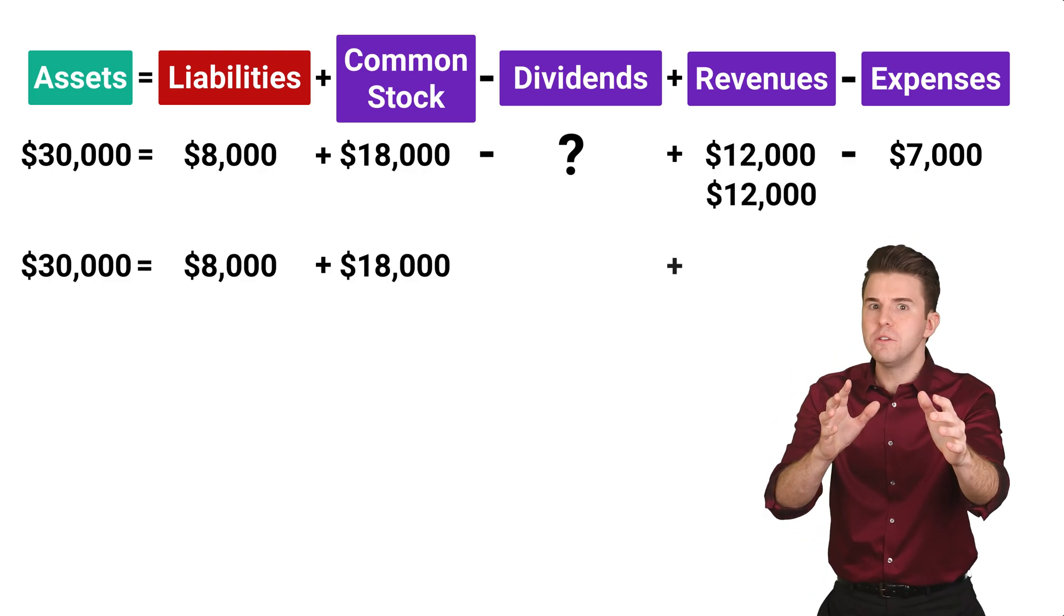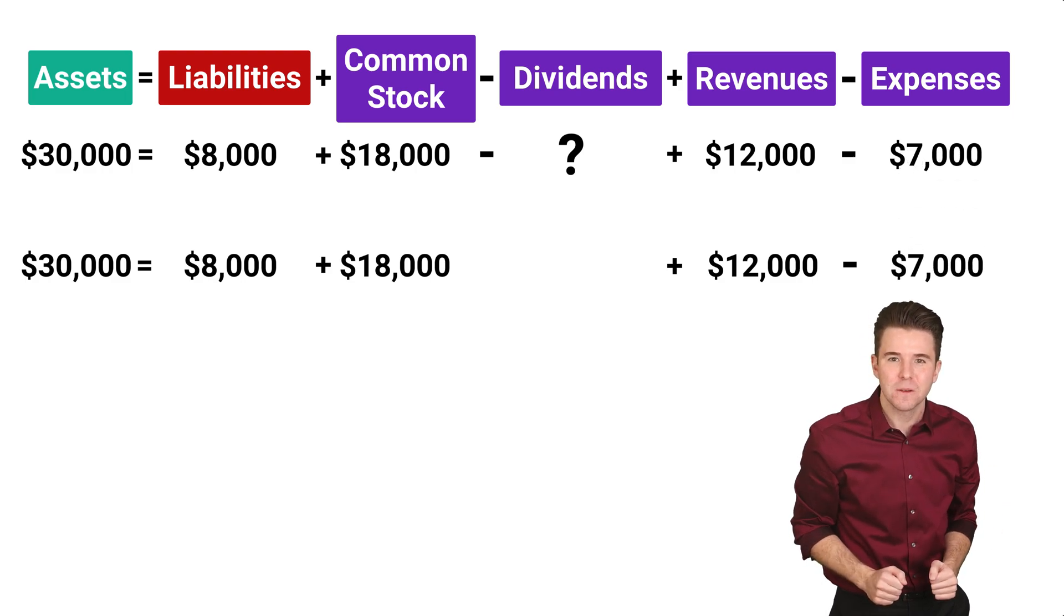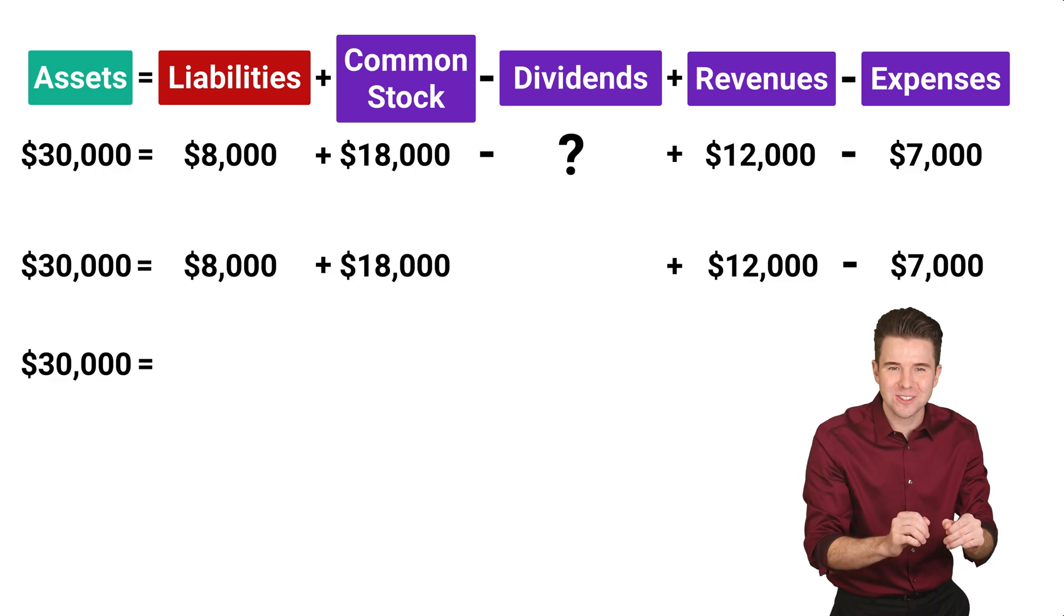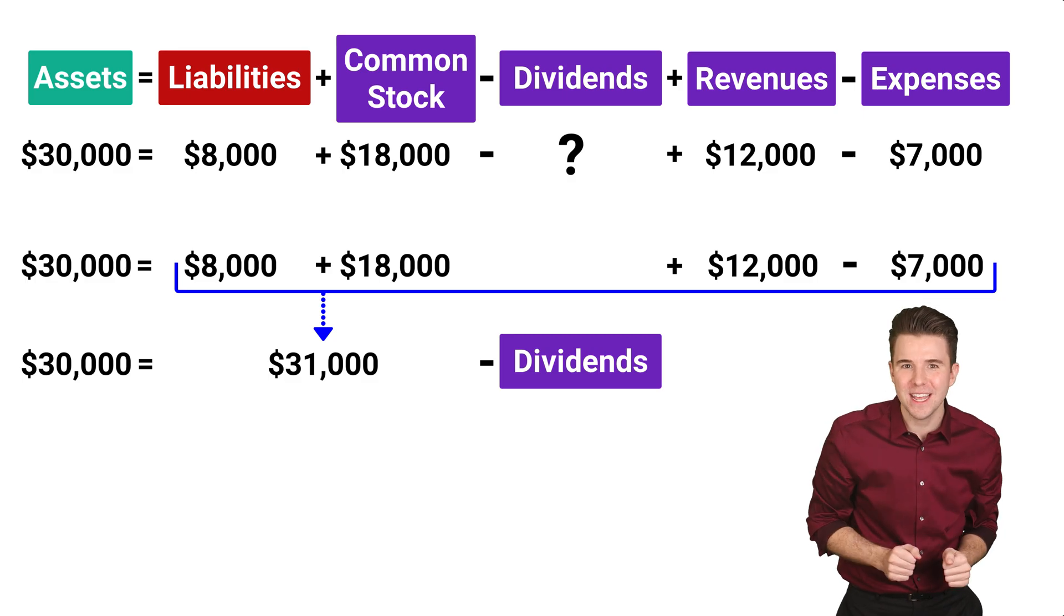add revenues of 12,000 and subtract expenses of 7,000. This gets us 30,000 equals 31,000 minus dividends.